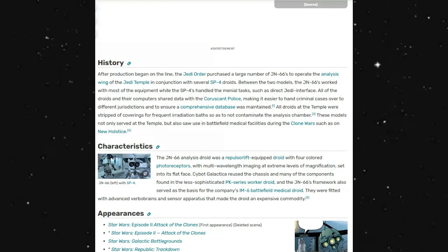Between the two models, the JN-66 worked with most of the equipment while the SP-4s handled the menial tasks, such as direct Jedi interface. All of the droids and their computers shared data with the Coruscant Police, making it easier to hand criminal cases over to different jurisdictions and to ensure the comprehensive database was maintained.